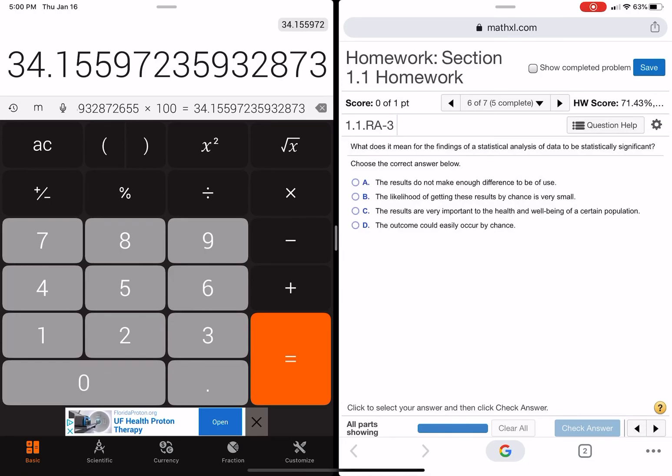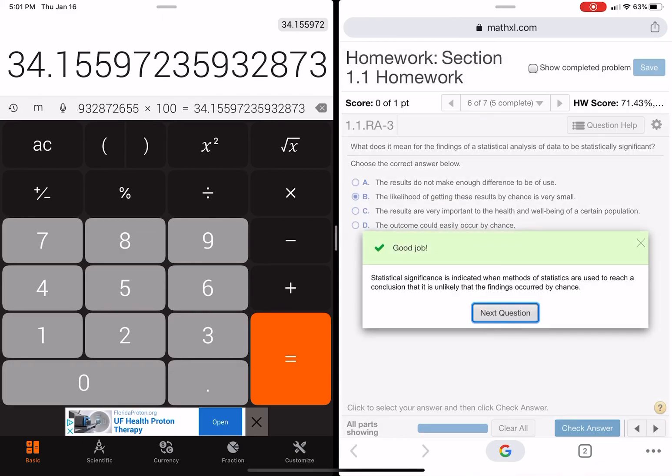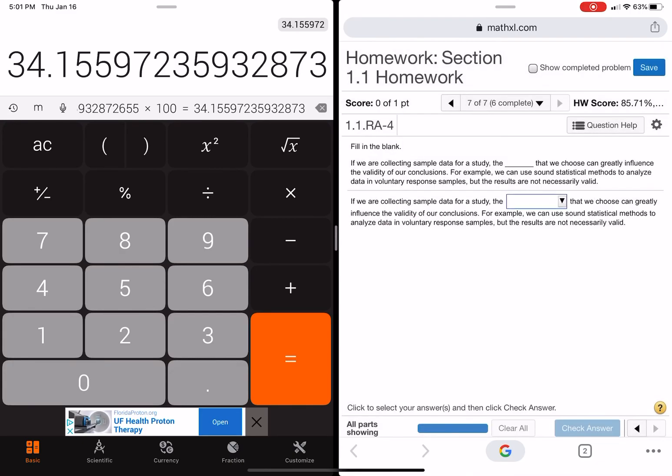So basically what that's saying, I know I'm running on a little bit, but what it's saying is you could have a very little difference between two groups, and that could be statistically significant. But in practicality, the common sense is really not that big of a difference. Look, this popped up again. Again, the likelihood of getting these groups is very small. I don't know how that happened.